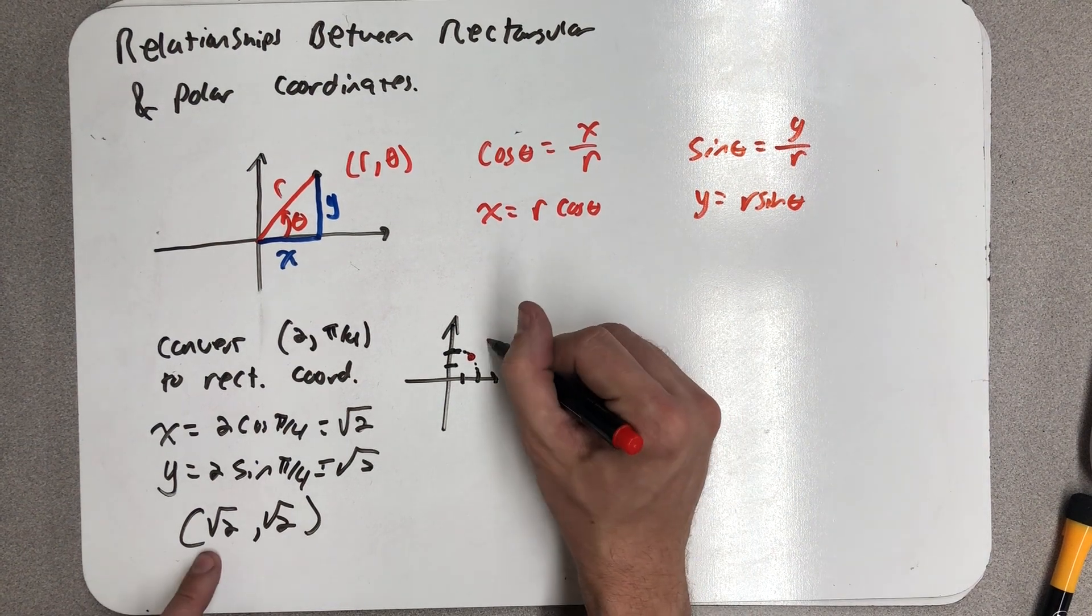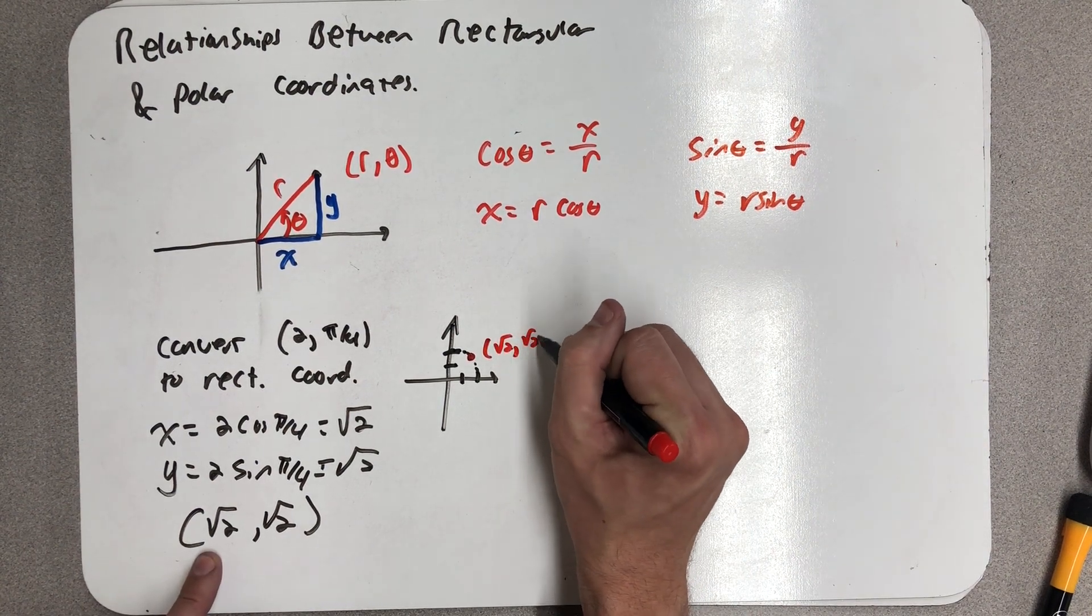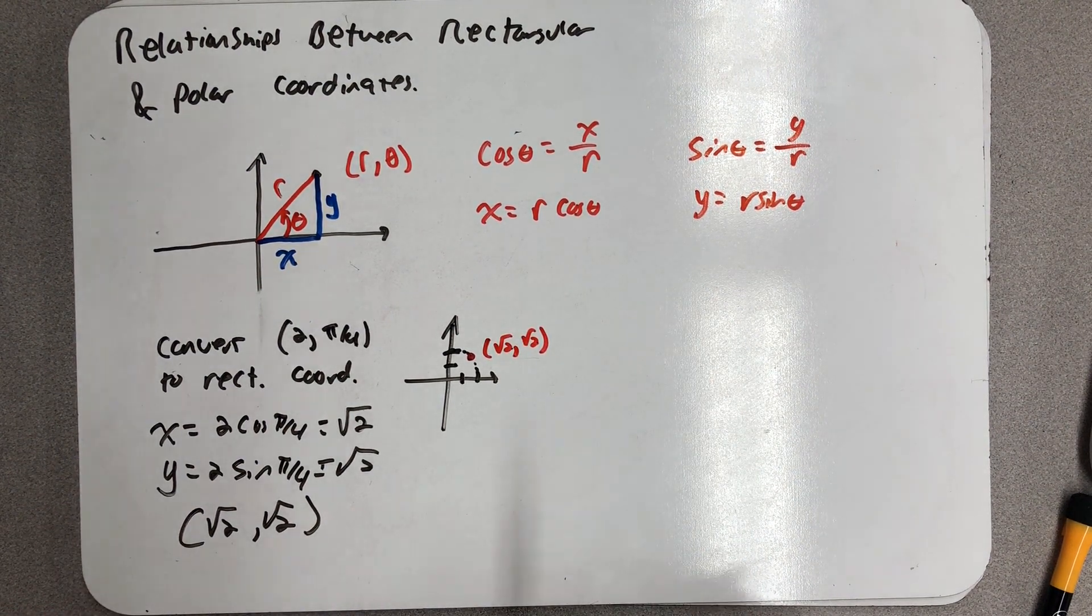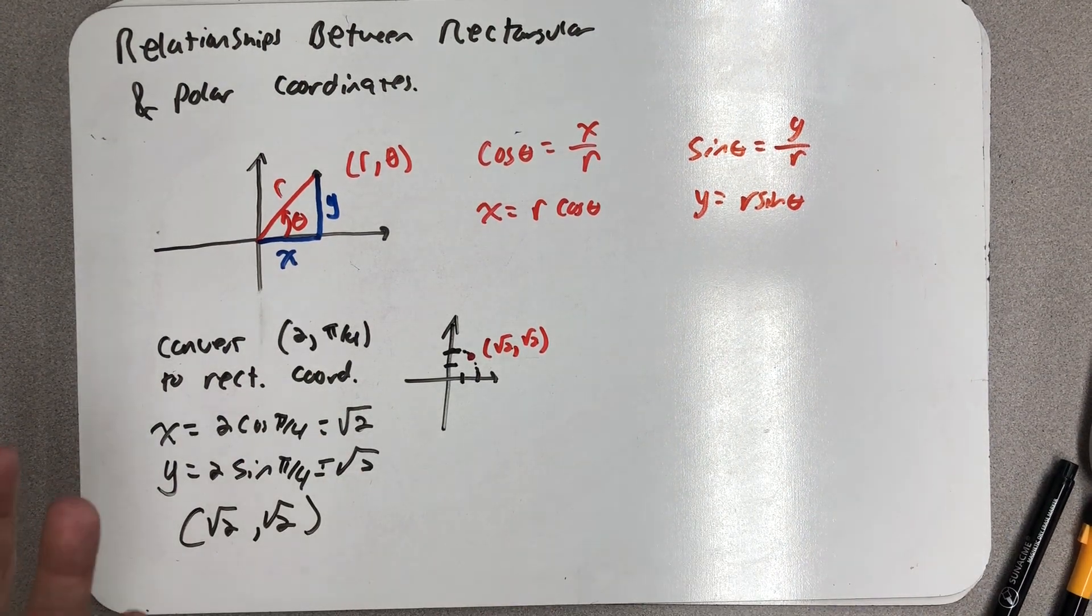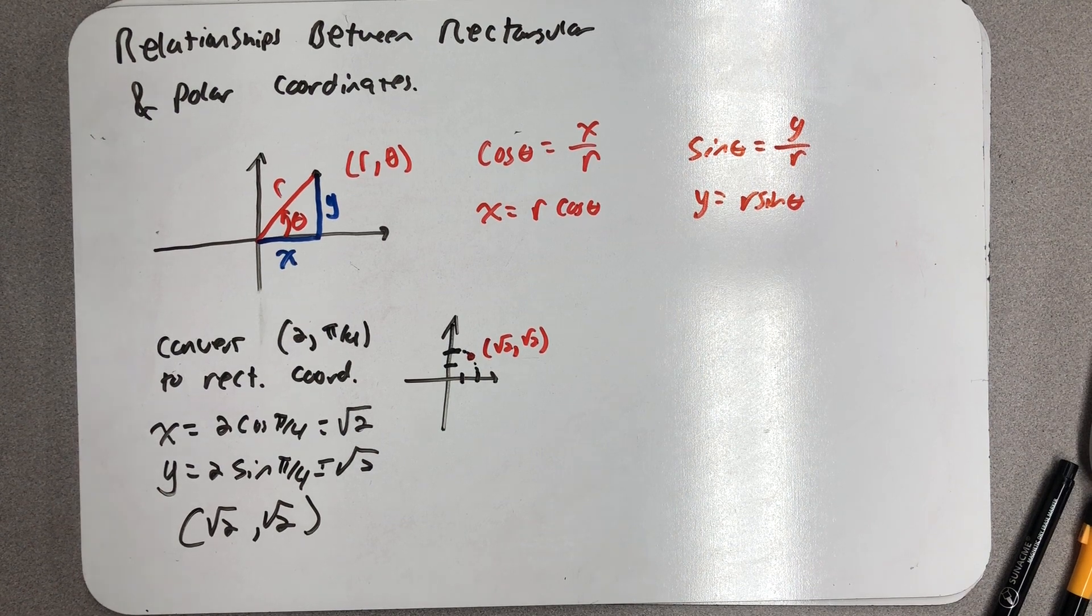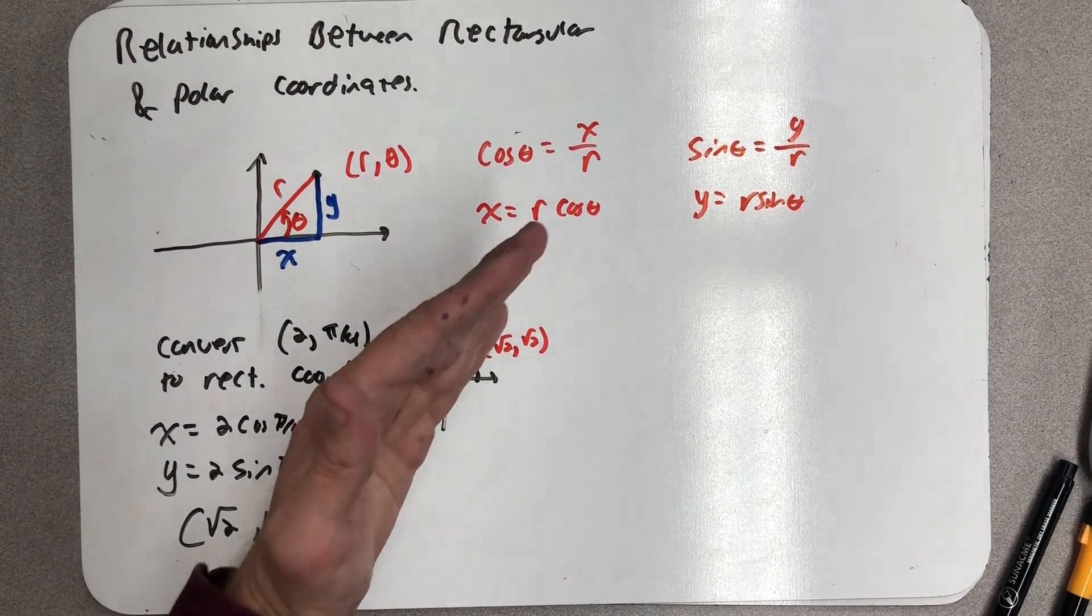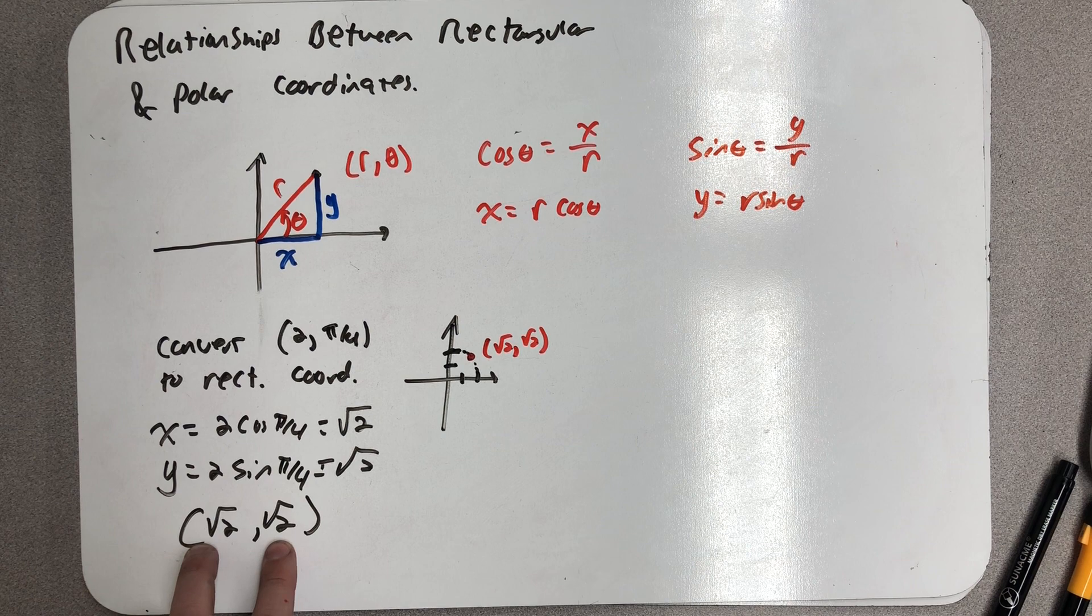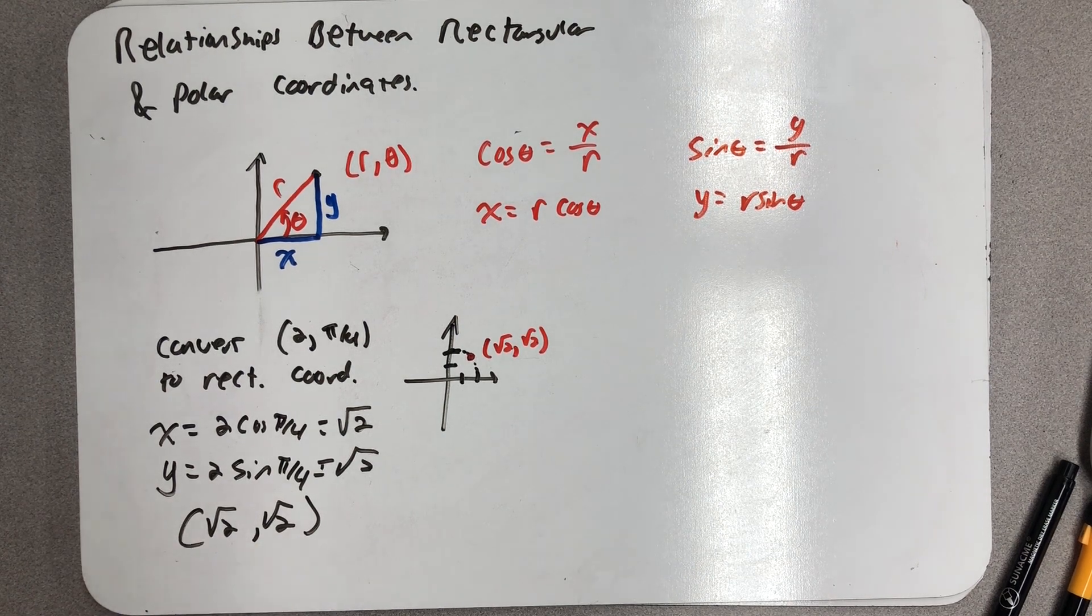And in rectangular coordinates it's (√2, √2). I hope you noticed that I applied the polar point because that is actually easier to do exactly without having to know that the square root of 2 is about 1.414. It also makes sense, being right in the middle of the first quadrant, that I have to have the same number in both spots.